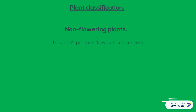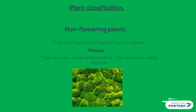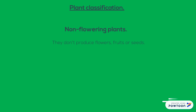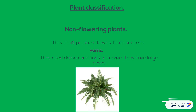Now we are going to deal with non-flowering plants. They don't produce flowers, fruits, or seeds. One group is mosses: they are very small simple plants, and their roots are called rhizomes. The second group of non-flowering plants are ferns: they need damp conditions to survive and they have large leaves. Here you are an example.